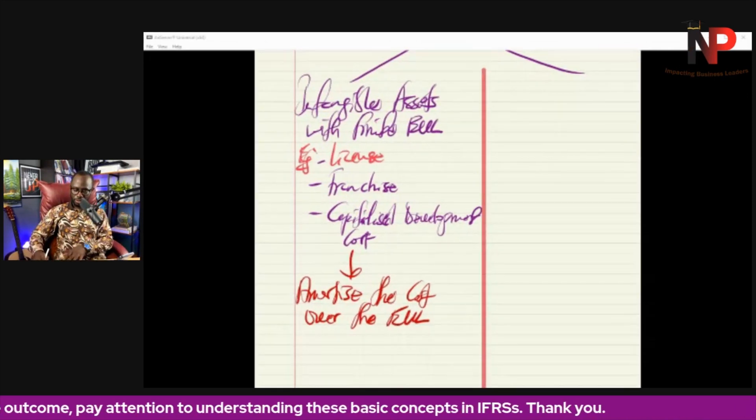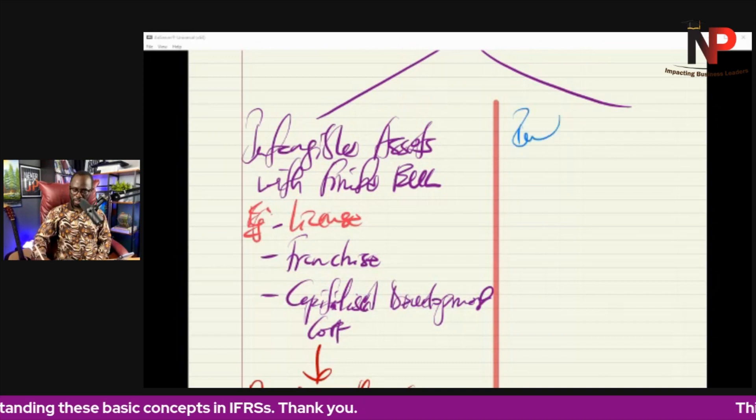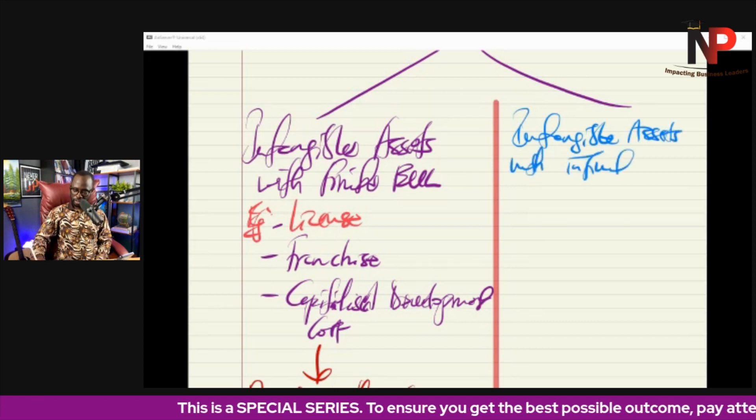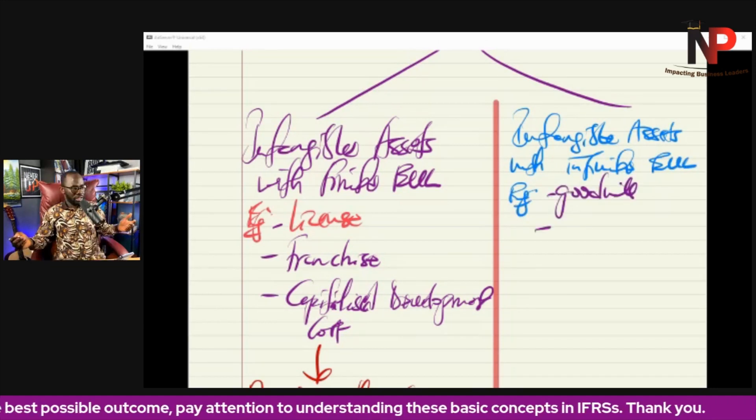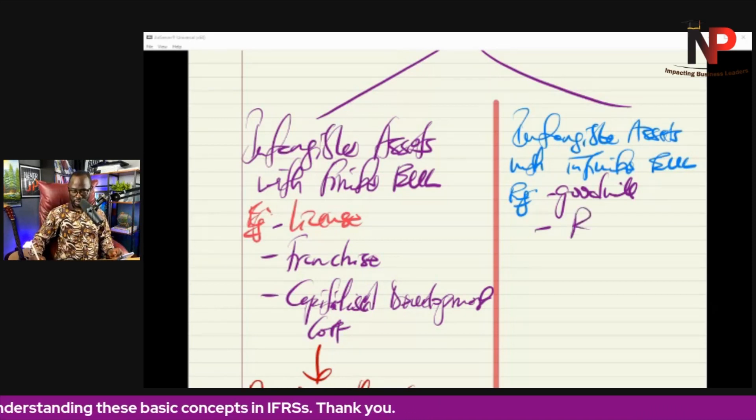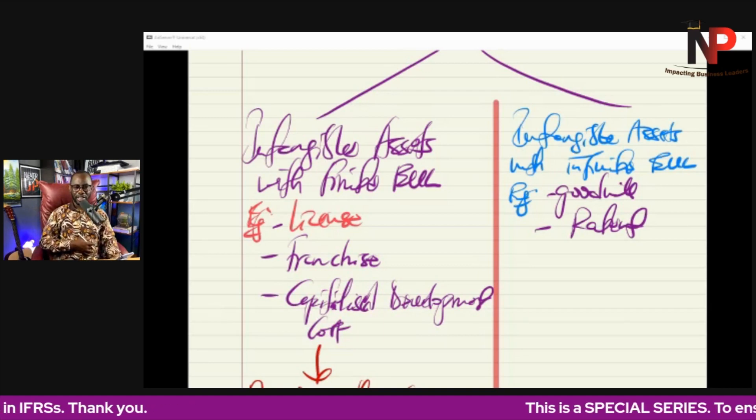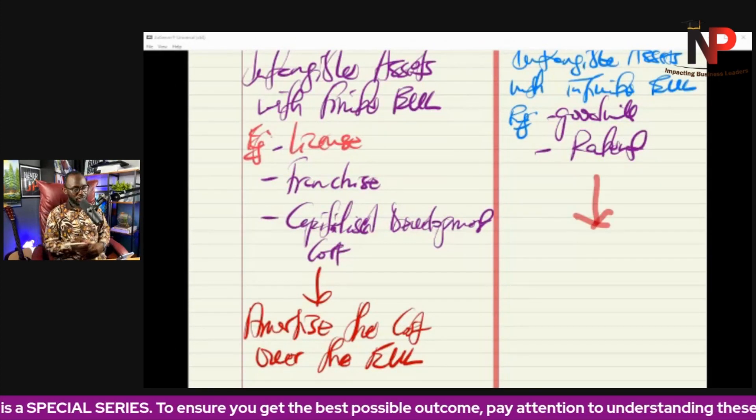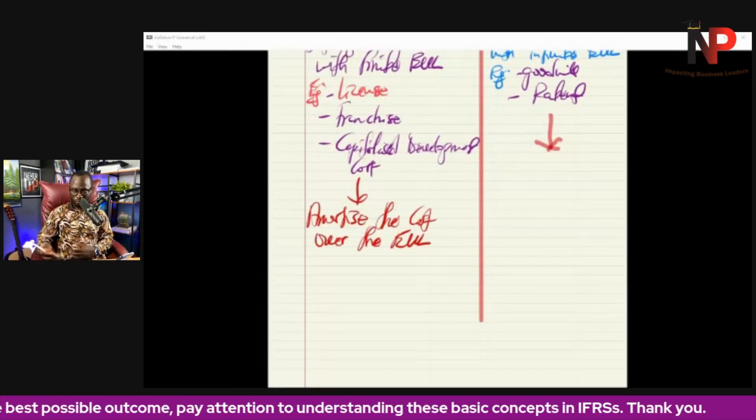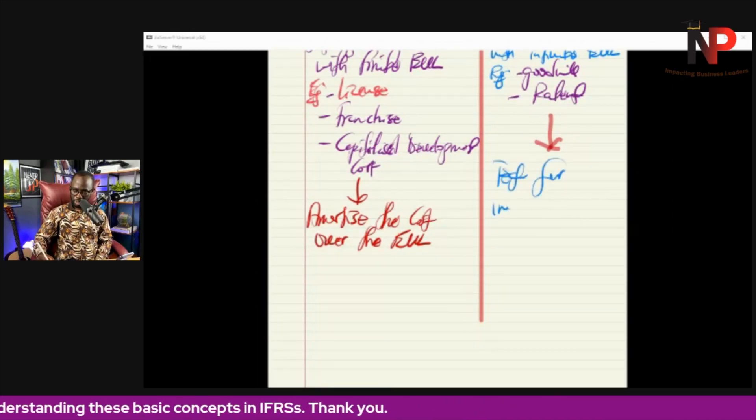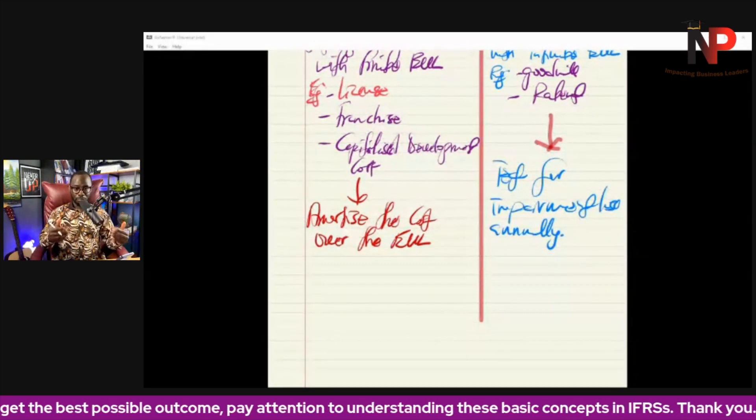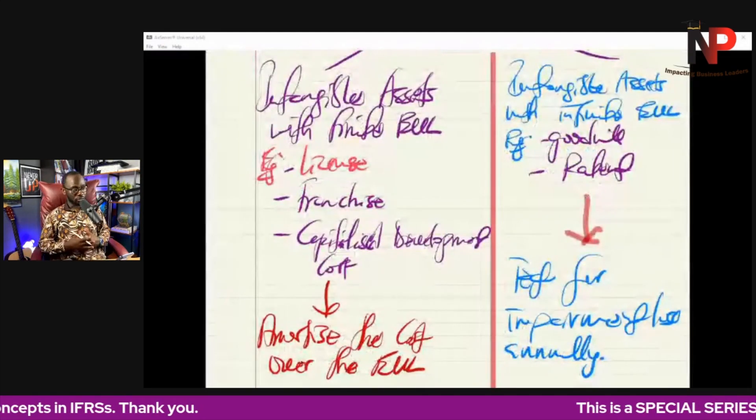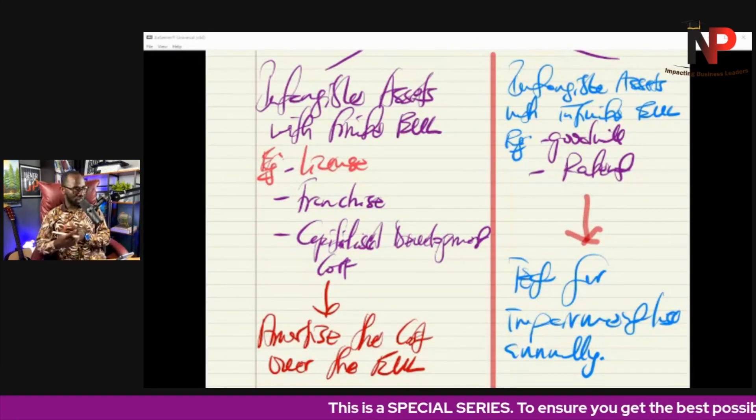But there are other intangible assets with infinite economic useful life. In other words, you cannot determine when they will be out. So intangible assets with infinite economic useful life. Example of this could be goodwill. And sometimes we can talk about issues like patent, even though patent to some extent can be a finite thing, sometimes it can be indefinite. For these kind of intangible assets, we don't amortize because if you are amortizing over how many years? So what we do is to test for impairments annually. And we look at the way we test for impairment in a moment. An asset is impaired when the carrying amount is greater than the recoverable amount. We'll look at that later on under IAS 36.